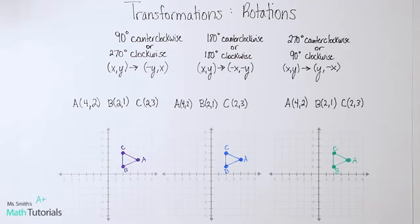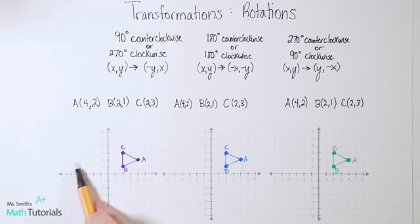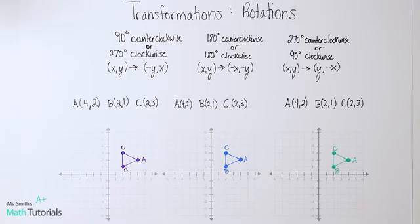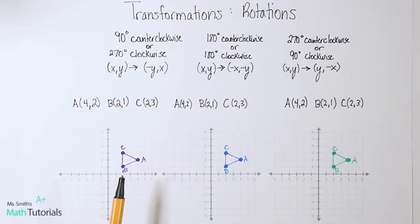Rotations are basically when we take an image or a point and rotate it around the graph based on a certain number of degrees that they will ask for. There are some more rules that we have to add to our rule sheet — we have quite a few so far. These are three more rules that we need to learn.